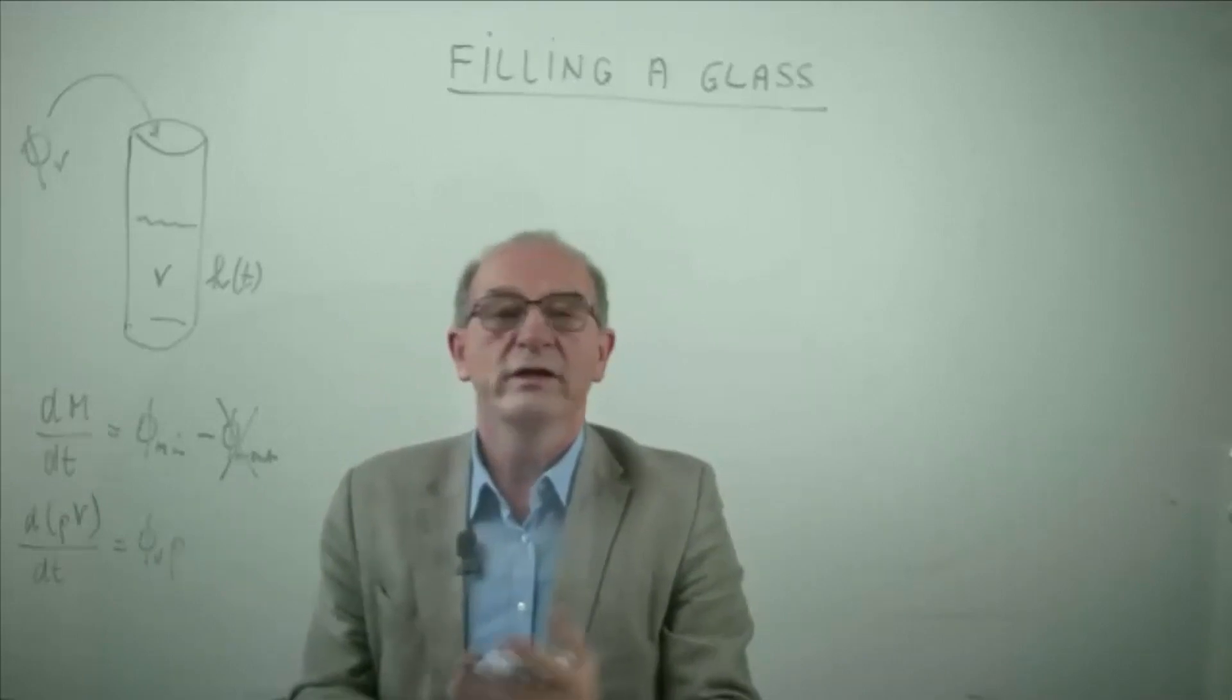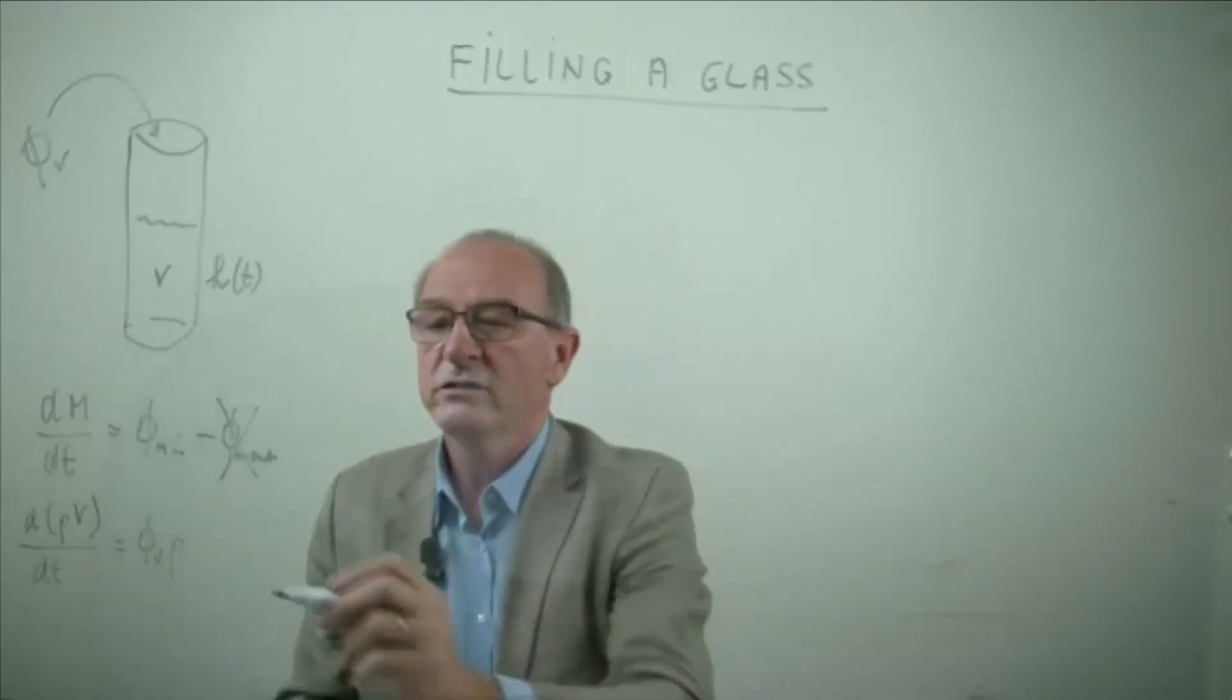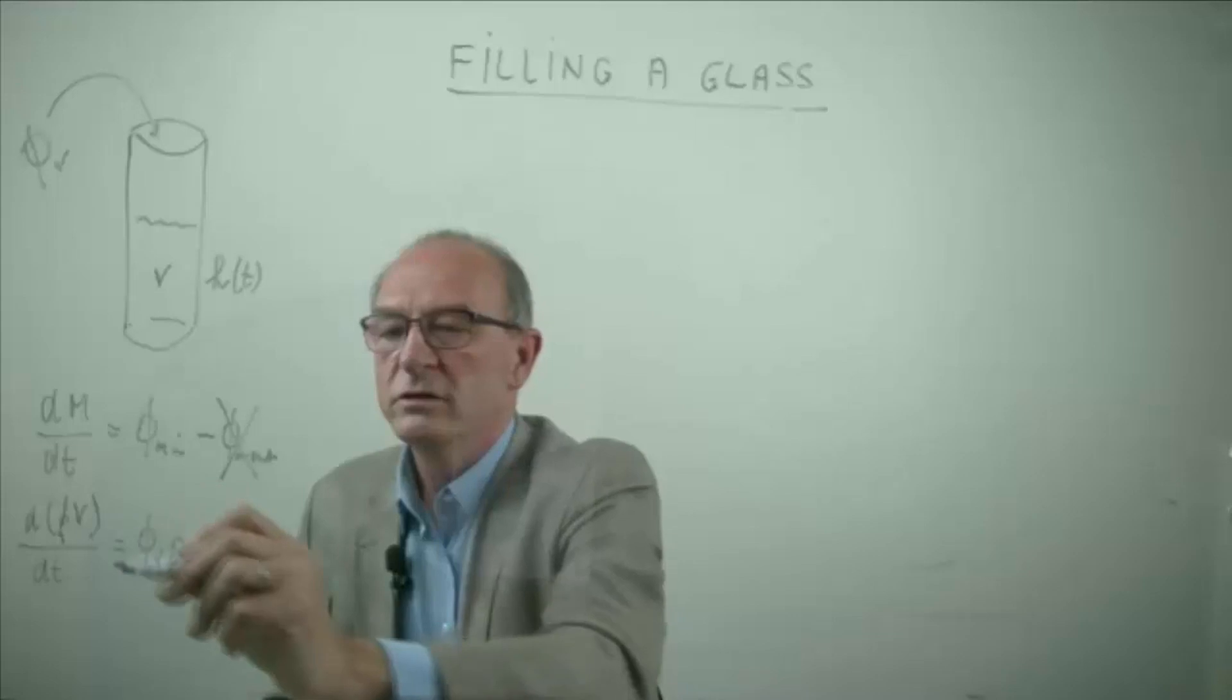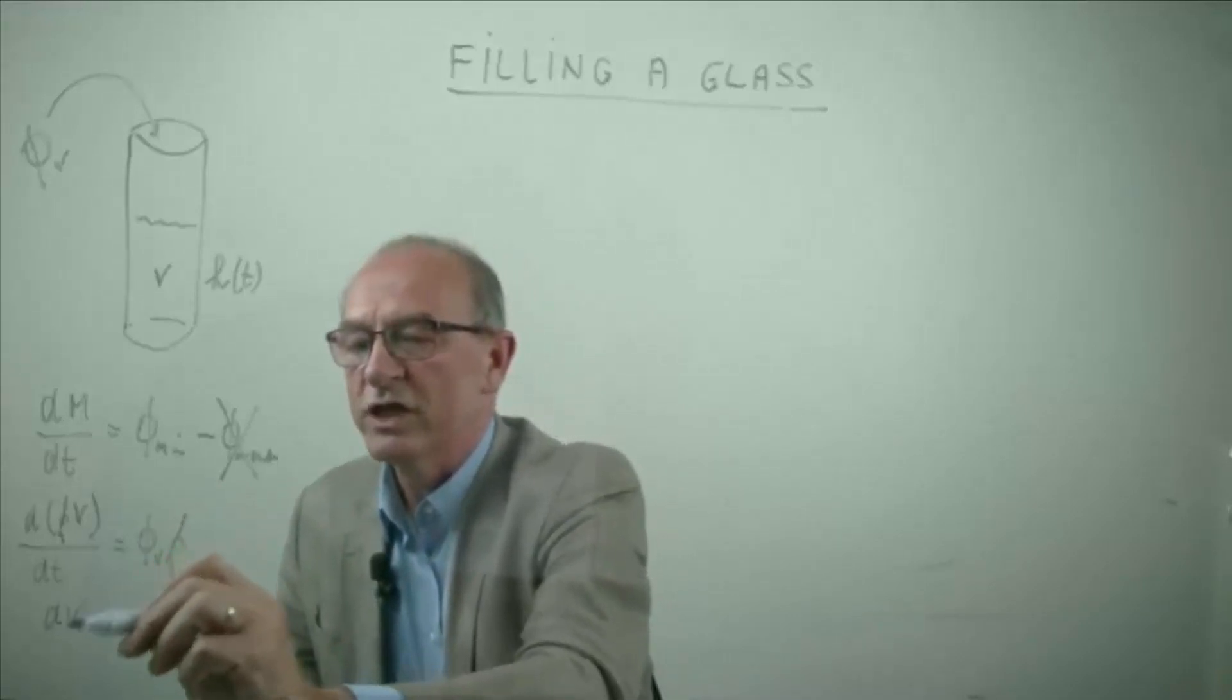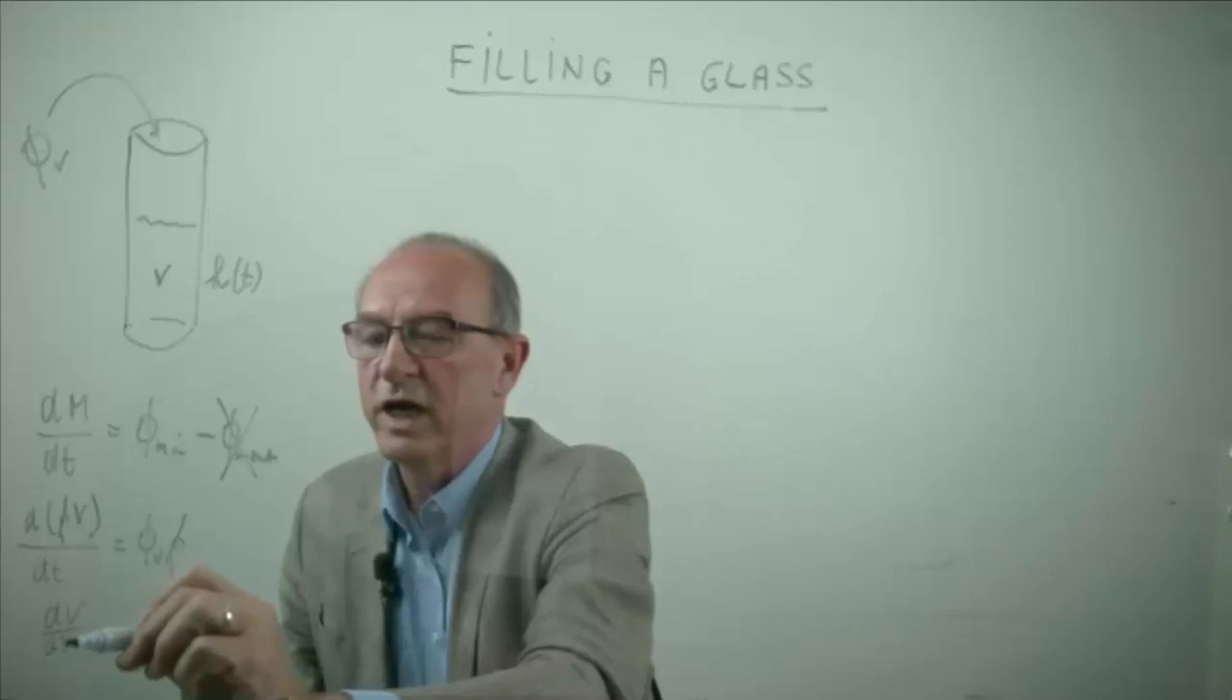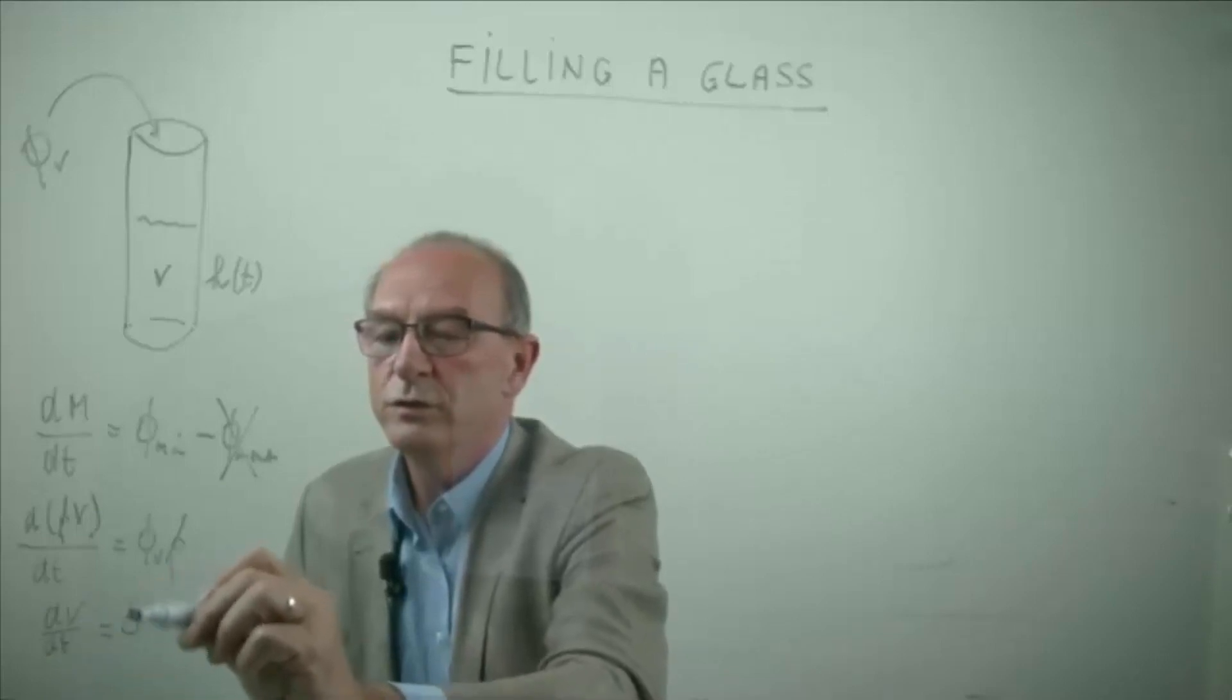We assume that the density is constant on both sides, so you can divide both sides by the density. The only equation which remains is: the change of volume as a function of time is equal to the volume flow rate.